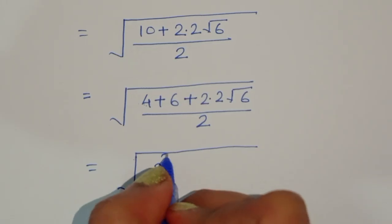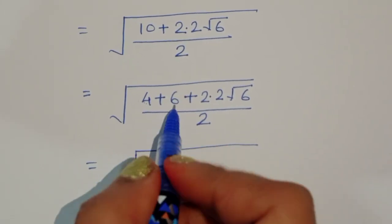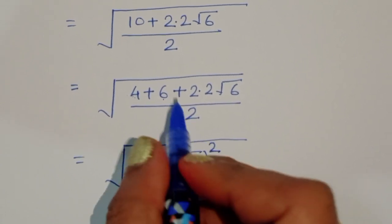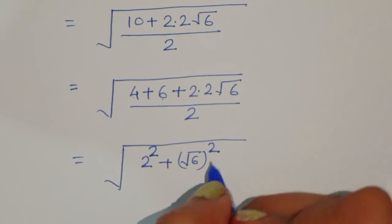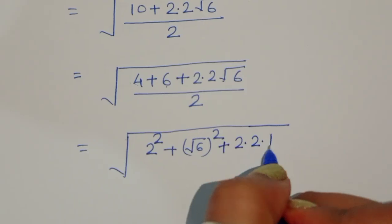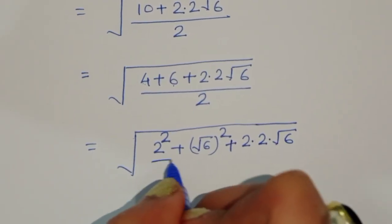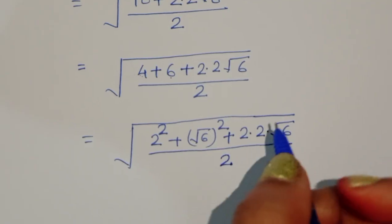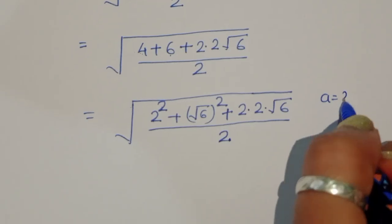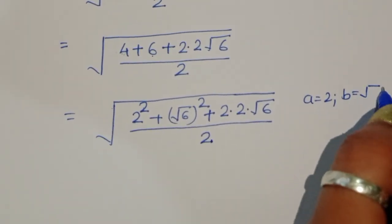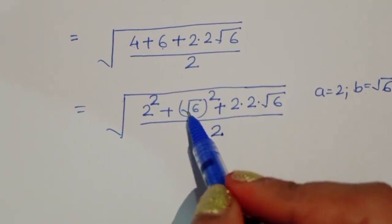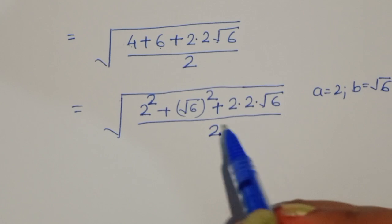So, 4 we can write as 2 squared, and 6 we can write as square root of 6 whole squared. So it becomes 2 squared plus square root of 6 whole squared plus 2 times 2 times square root of 6, divided by 2. Here, if a equals 2 and b equals square root of 6, then we have a squared plus b squared plus 2ab.